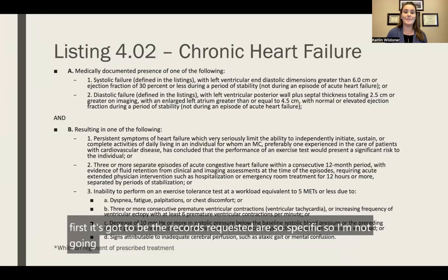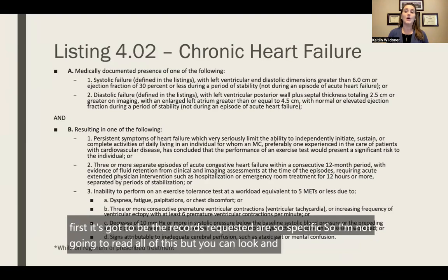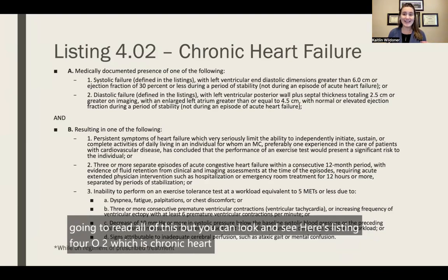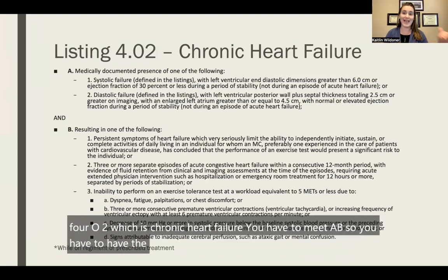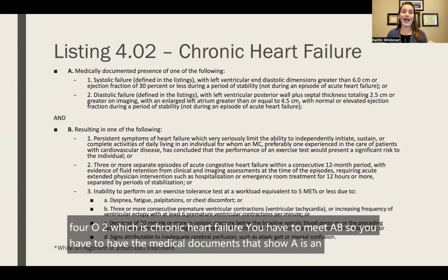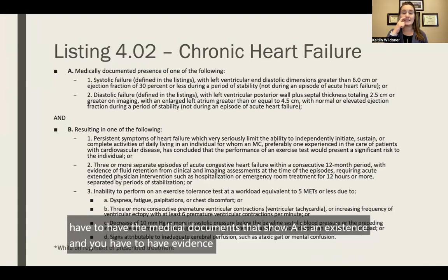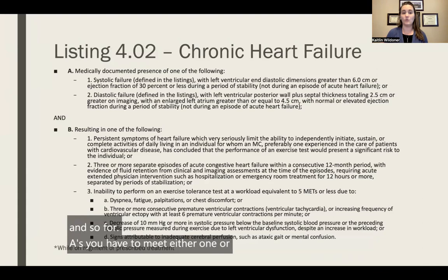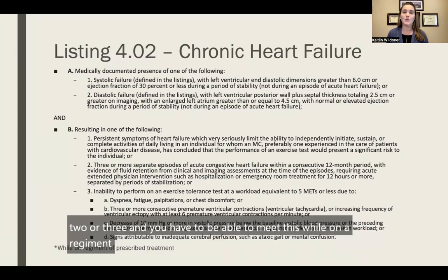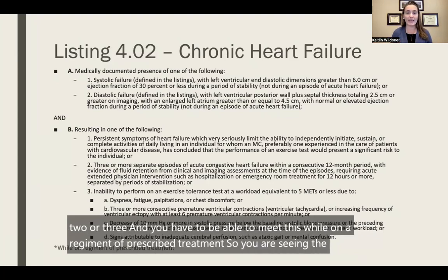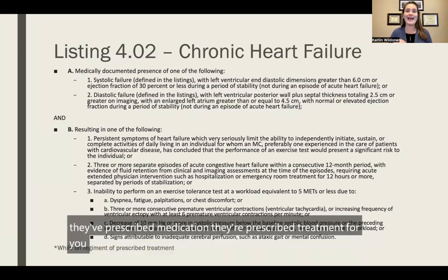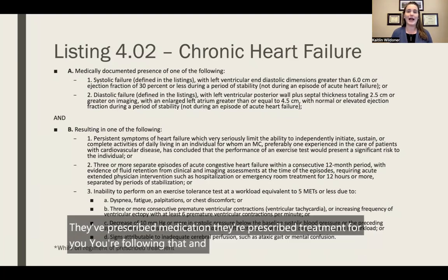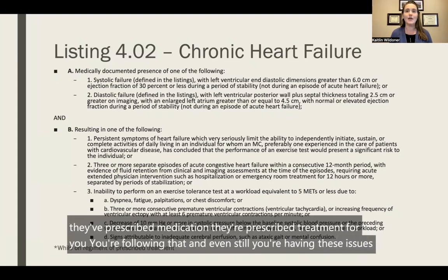You can see here listing 4.02, which is chronic heart failure. You have to meet both A and B. You have to have medical documents showing A is in existence and evidence that B is also in existence. For A, you have to meet either one or two; for B, you've got to meet one, two, or three. And you have to be able to meet these while on a regimen of prescribed treatment — you're seeing the doctor, they've prescribed medication and treatment for you, you're following that, and even still you're having these issues, which can be documented through medical records.